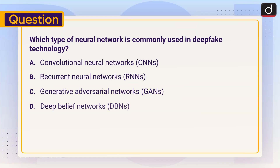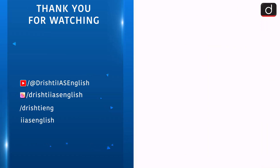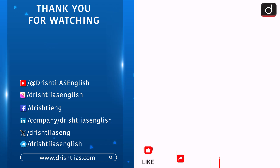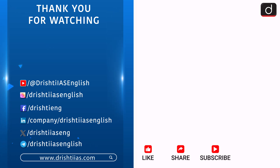Now for a practice question: which type of neural network is commonly used in deepfake technology? Options are: (A) Convolutional Neural Networks, (B) Recurrent Neural Networks, (C) Generative Adversarial Networks, or (D) Deep Belief Networks. Send your answer in the comment section. Stay tuned for the next episode, thanks for watching, have a great day. For more informative content, like, share, and subscribe, and don't forget to press the bell icon to get notifications.